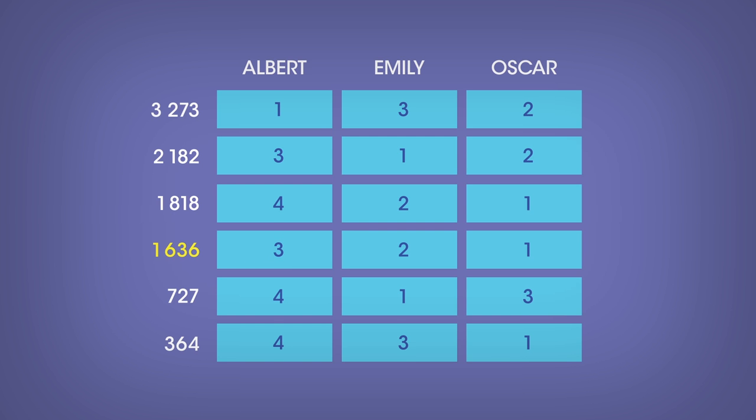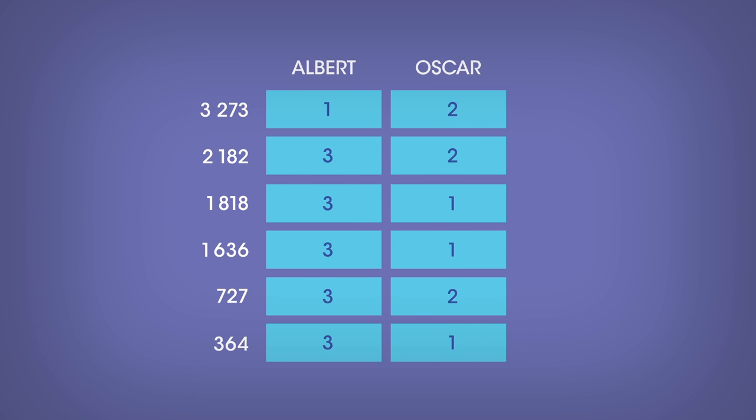We are now at the penultimate round, and with not enough rank one votes, Emily is defeated. Voters from lines two to six make Albert their second choice, while Oscar becomes the first choice. Unfortunately for you, Albert, it means that Oscar gets elected during the fourth and last round, with 6,727 rank one votes.